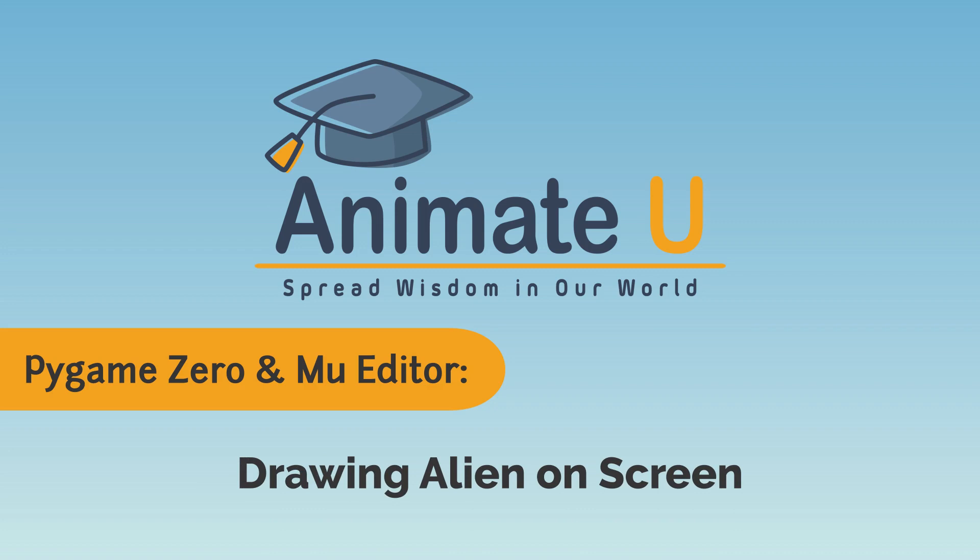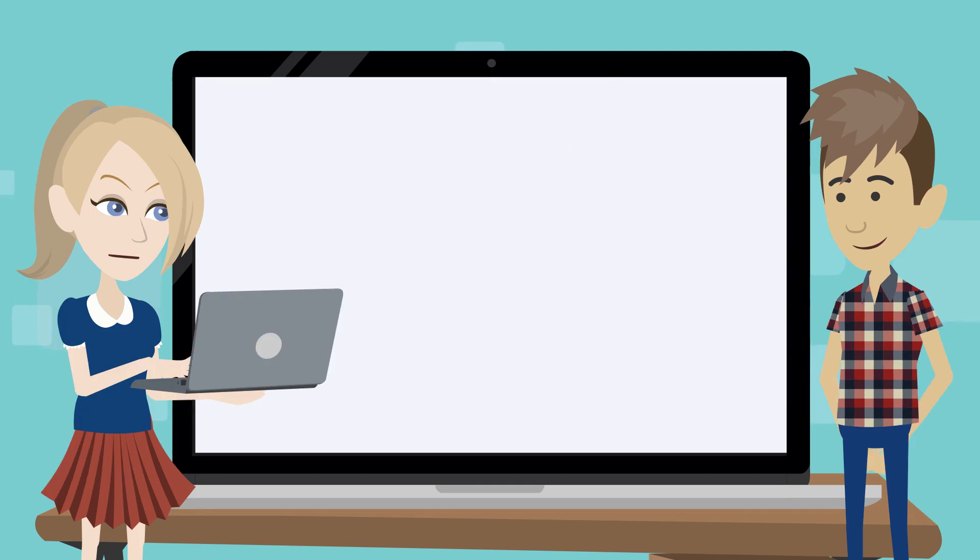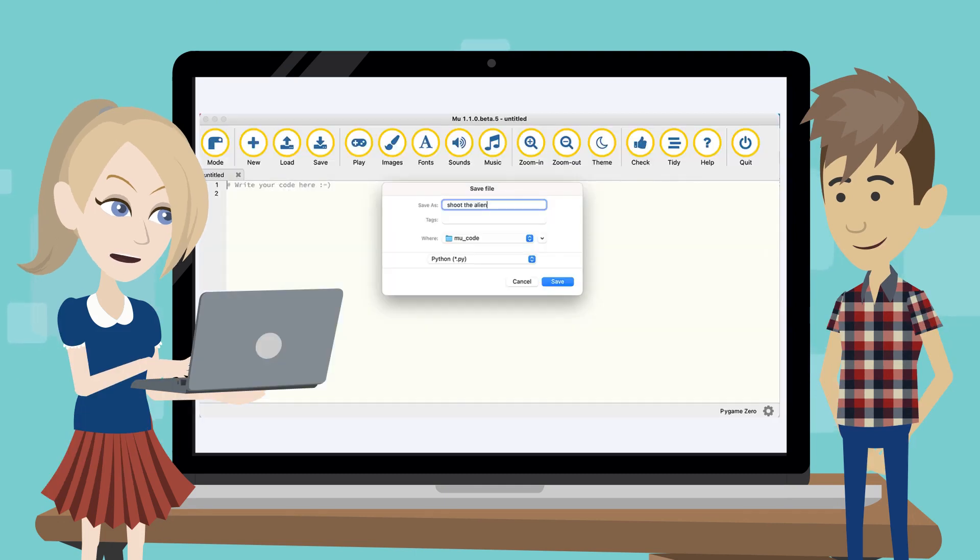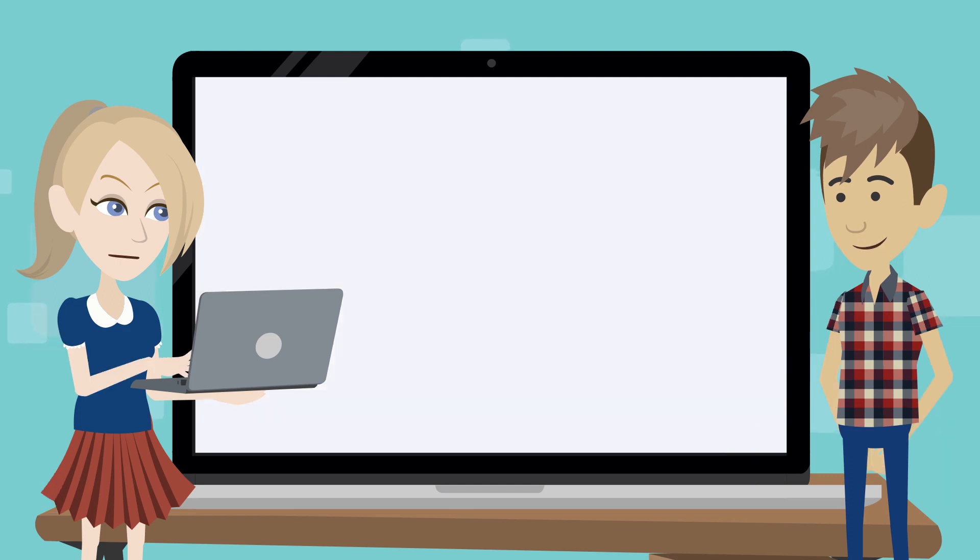Drawing alien on screen. Let's get ready to build the game. I launch MuEditor and save the file as a new file with a name. I'm ready. Now we can start writing some code. Let's draw the alien on the screen as we learned before. The screen size is set automatically, even if we don't set it.